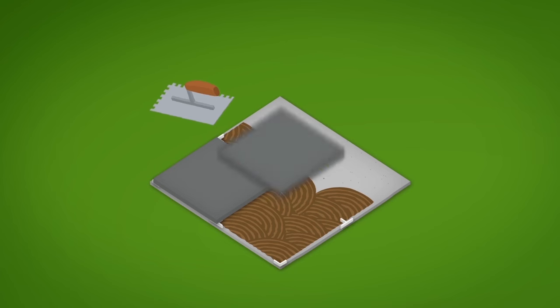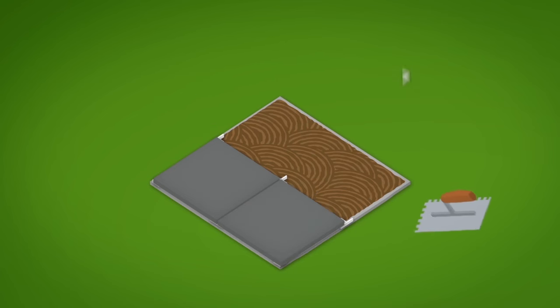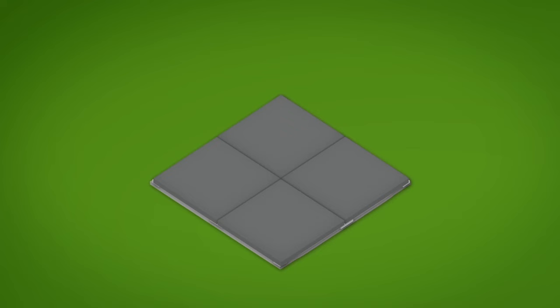Lay Evo 2 slabs using 3mm spacers. Finish the laying, checking that the slabs have adhered correctly to the glue layer. After laying, remove the spacers with a trowel and grout the floor.